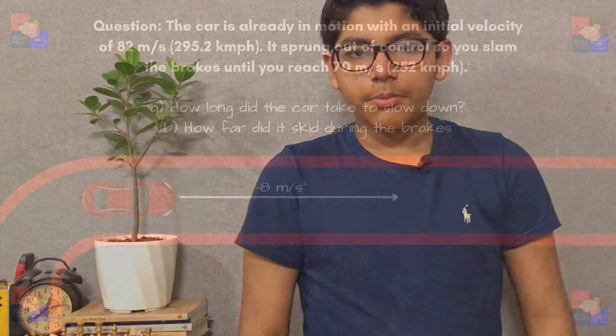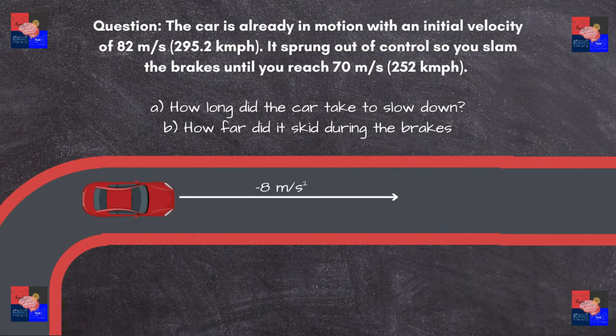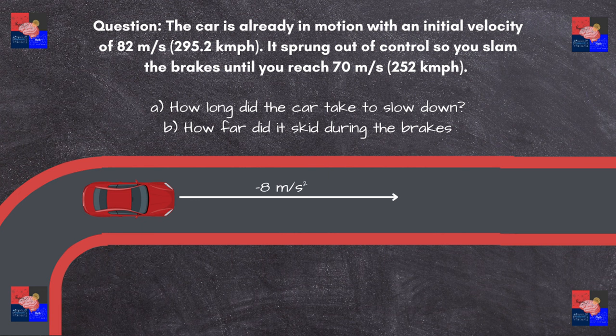Let's go with another one continuing the race course. Say you take a corner. The car is already in motion when you exit. You travel at 82 meters per second, which is almost 295 kilometers per hour, but your car sprung out of control, so you slam the brakes at negative 8 meters per second squared until you reach 70 meters per second instead, which is 252 kilometers per hour, where your car is stable. A: how long did the car take to slow down, and B: how far did it travel until it reached the desired velocity?